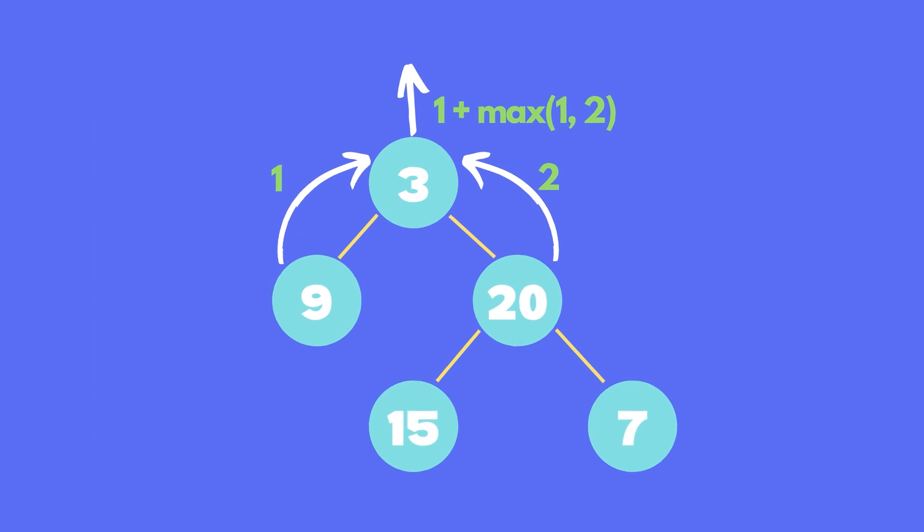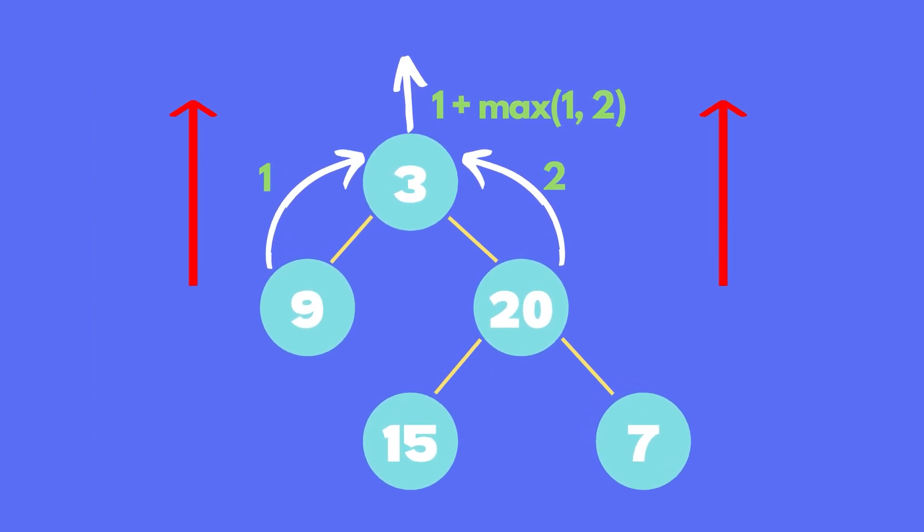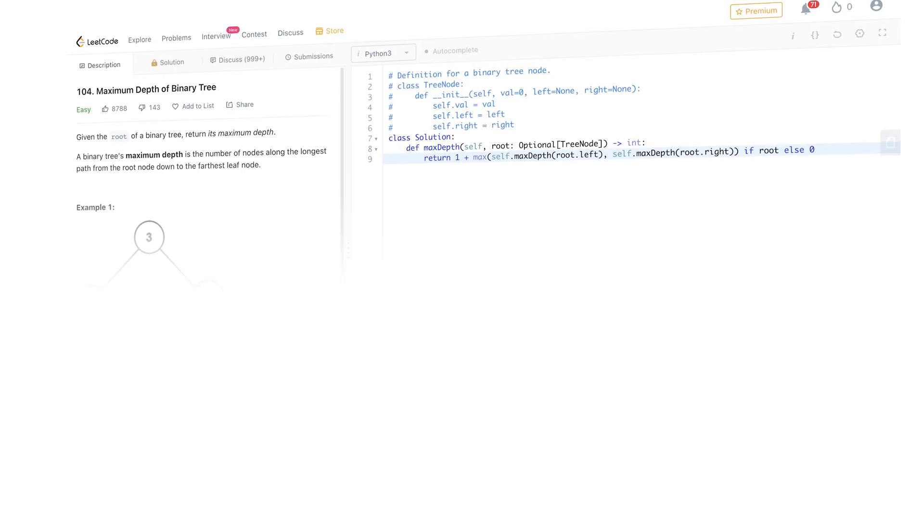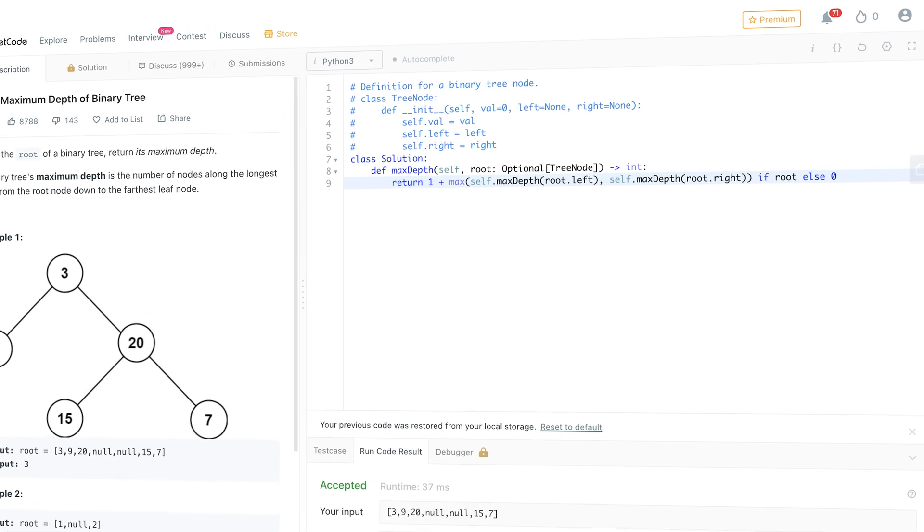Now, you are calculating the depth as well as the maximum depth as you come back up on the tree. And this solution is a true bottom-up approach. Before I tell you the time and space complexity of this solution, if you want to know how to write this solution in one line, here is how it looks in Python and Java.